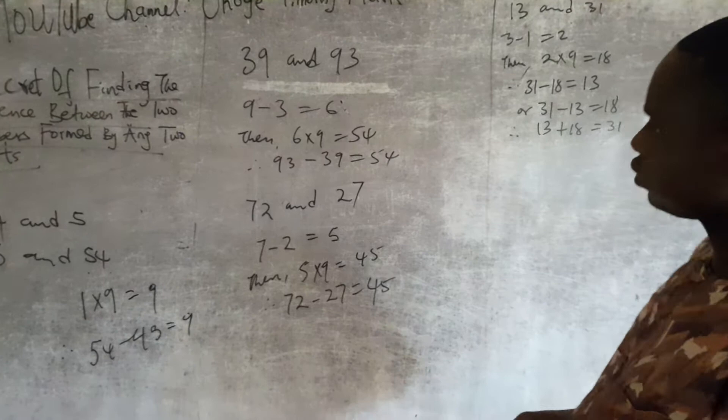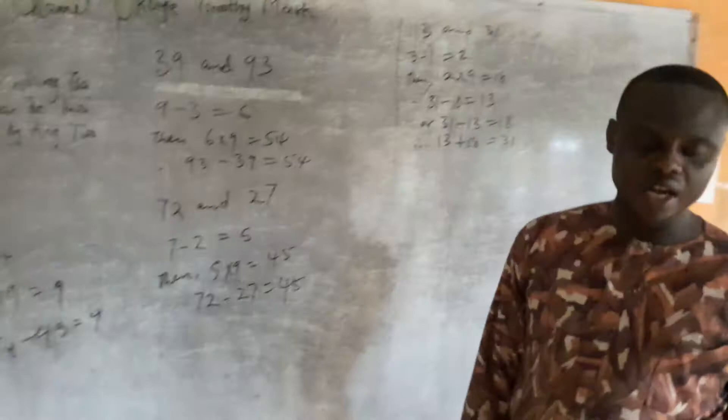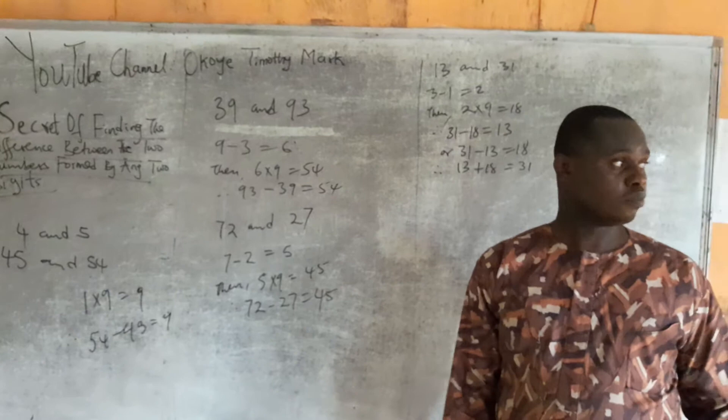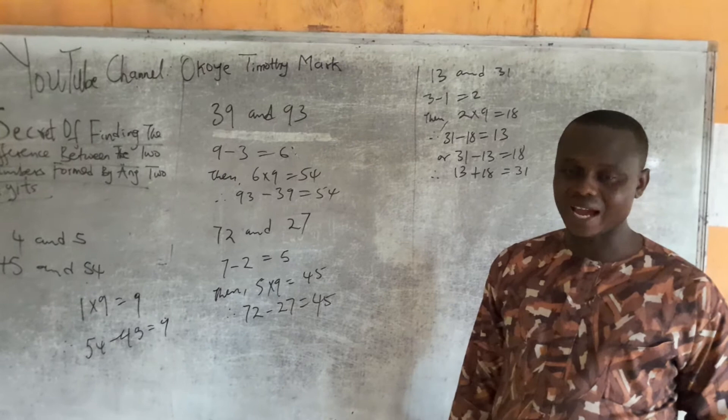So in a nutshell, wherever I have two digits forming a number, the difference between the bigger number and the smaller number is just by taking the difference between the two digits and multiplying by 9.